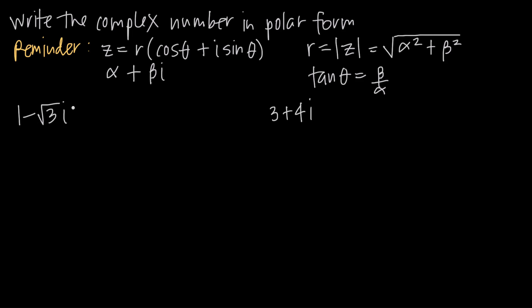We want to write this in polar form. The formula we're going to use is: z is equal to r times the quantity cosine of theta, plus i times sine of theta. We always leave i as it is, but we need to plug in values for r and theta — those are the values we need to find.